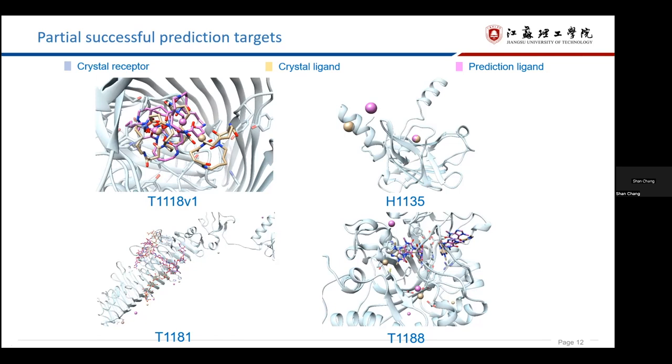The pose of small molecular ligand of T1188 is basically correct. You can see this picture. But there are two incorrect predictions for the metal ions, this one and this one.